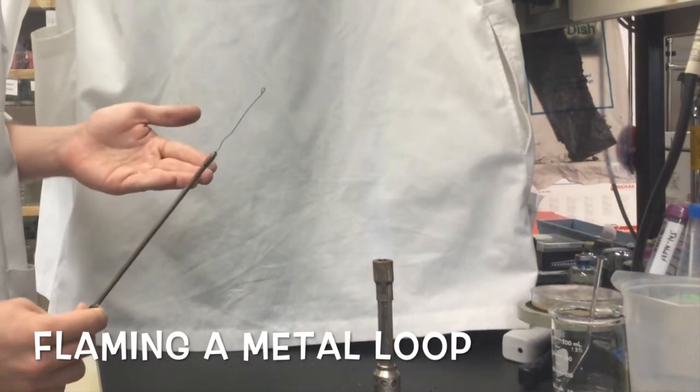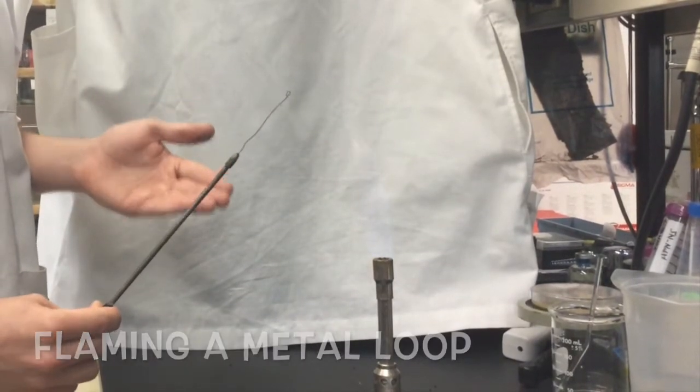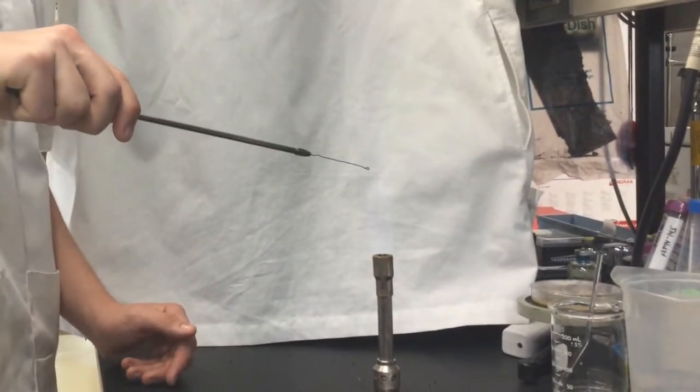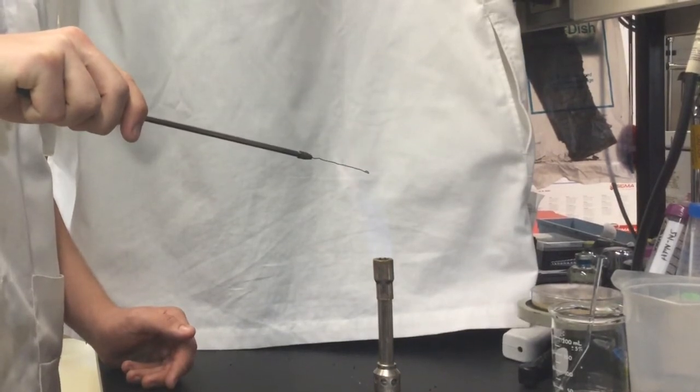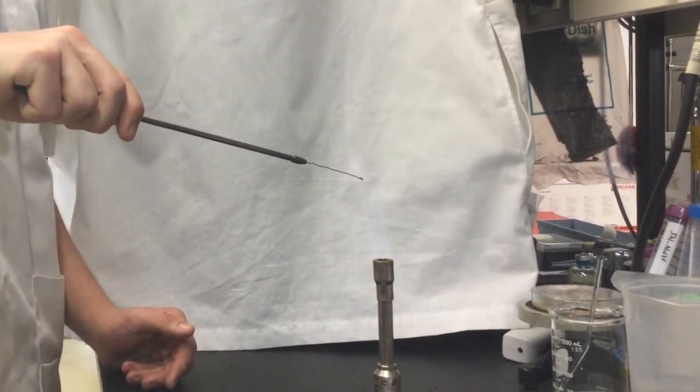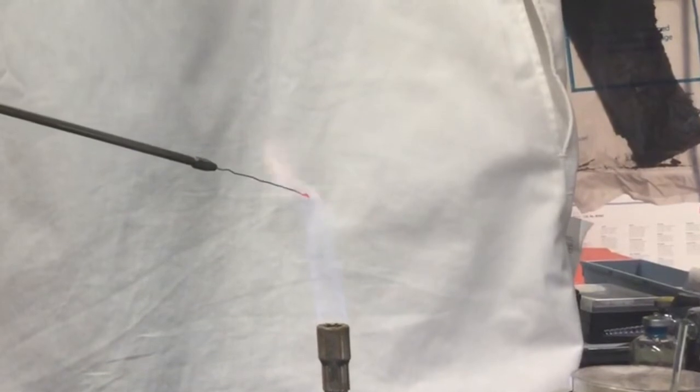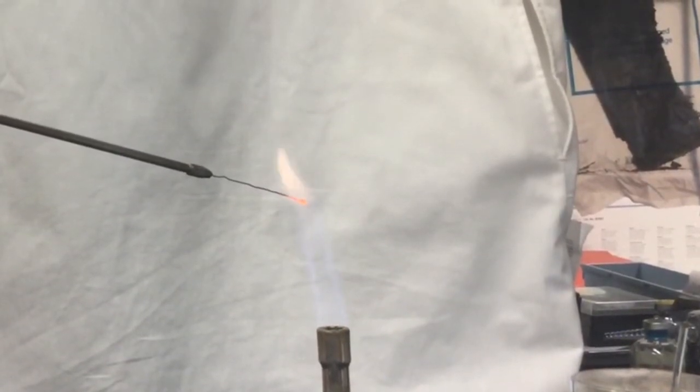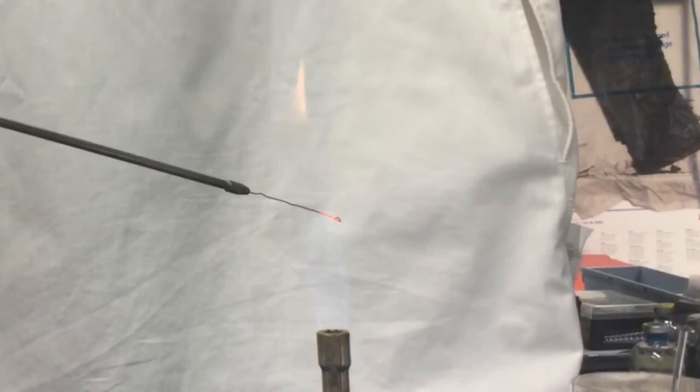Let's start with the metal inoculating loop first. Hold the tool facing downward. Place the end nearest the handle into the Bunsen flame and hold it there until red hot. Then draw the tool through the flame slowly until each part glows red.